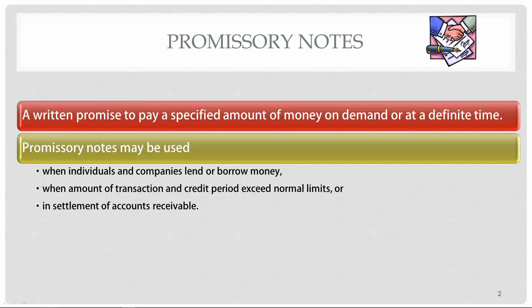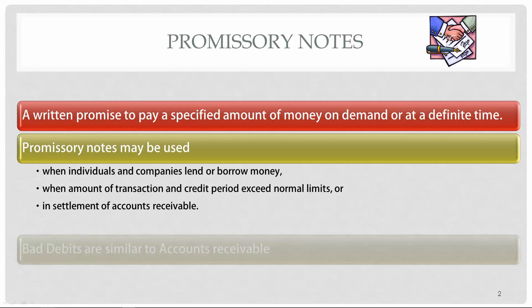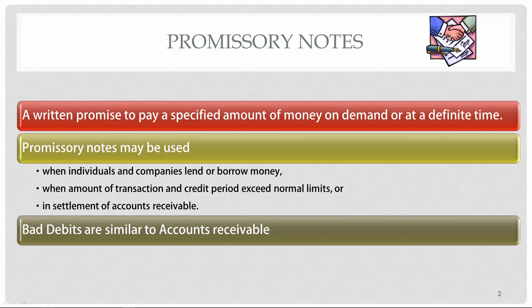Just like we do with accounts receivable, we need to evaluate our possible bad debts for notes receivable. When we record an allowance for doubtful accounts, it's applied if we think we're not going to be able to collect any of our notes.